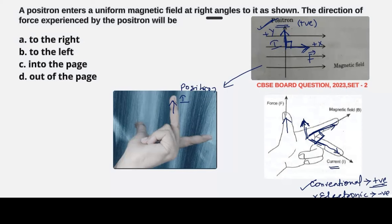This represents the current, that is the motion of the positron or the positive particle. And then this forefinger representing the magnetic field. Then you see the direction of thumb is pointing in this way, that is into the paper. So this will be the direction of force acting on the positron.